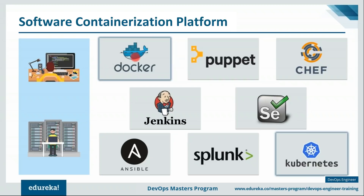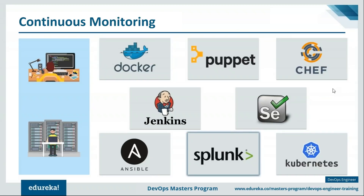Nowadays, with companies adopting microservice architecture and because of the way resource utilization is optimized with containers, knowledge of software containerization platforms like Docker is very important, along with container orchestration tools like Kubernetes. Docker is basically an open platform for developers and system admins to build, ship, and run distributed applications — whether on laptops, data center VMs, or the cloud. They should also have experience with logging and monitoring tools like Splunk and Nagios.